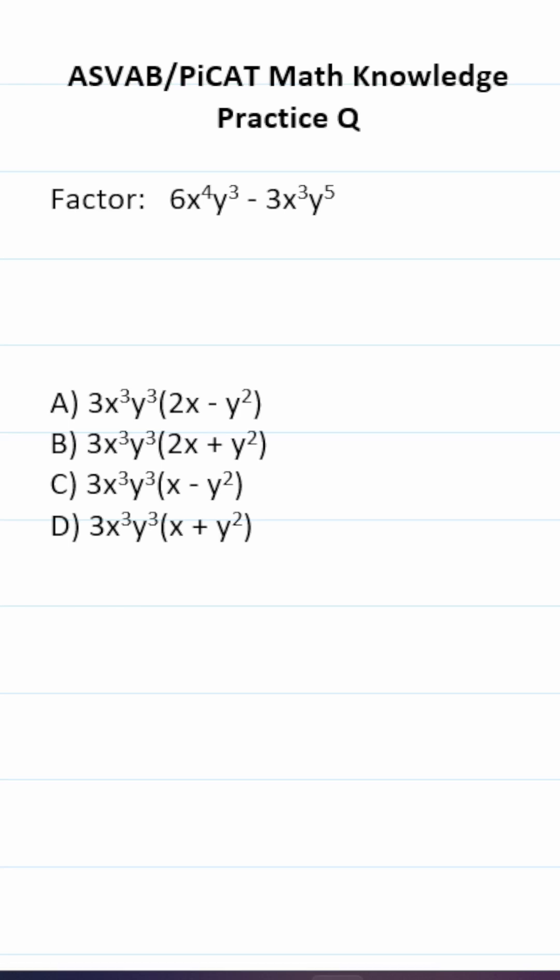This ASVAB PiCAT Math knowledge practice test question says factor 6x^4y^3 - 3x^3y^5. So it should be pretty obvious that between 6 and 3 we can factor out a 3.